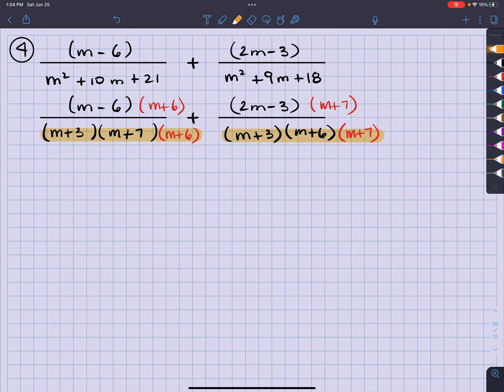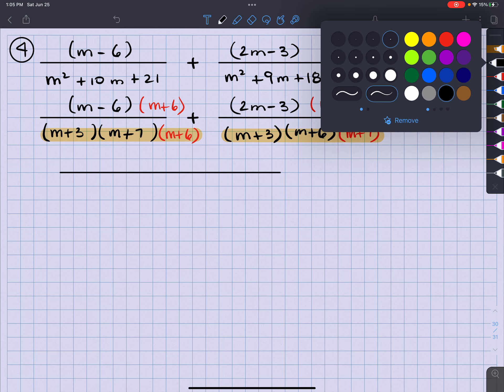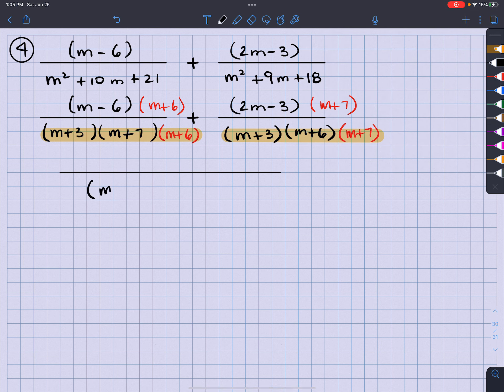So now what I want to do is I'm going to rewrite the top and keep the bottom. And when I'm adding or subtracting fractions, I'm going to add or subtract the top and keep the bottom. What does that mean? That means I'm going to keep the bottom, which means I'm going to keep all of this: M plus 3, M plus 7, M plus 6. And I'm only going to write it once. I don't have to write it twice.